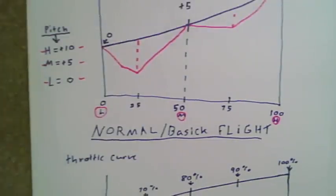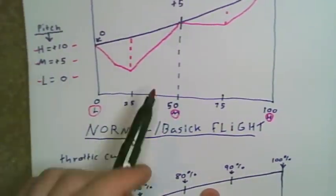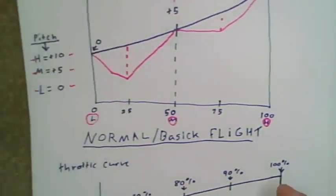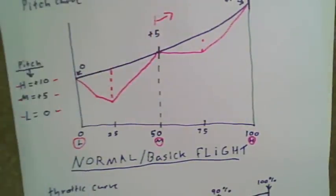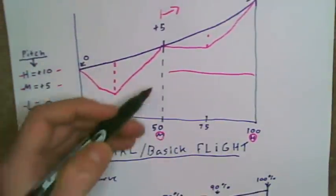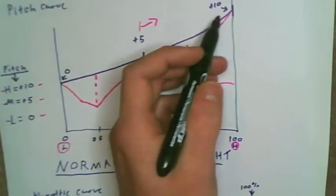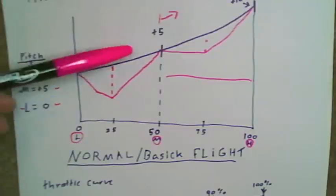Once again, in normal mode we want zero, plus five, and plus ten at your low, medium, and high settings with a nice smooth curve. I usually do all three pitch curves first, then go through and do the throttle curve settings. This is a good basic starting point. You're going to achieve lift at right around a plus five, which will depend on your throttle curve and head speed. Realistically you're going to be flying on the upper end of the spectrum.